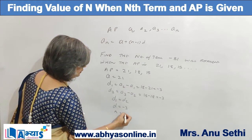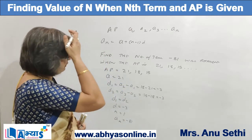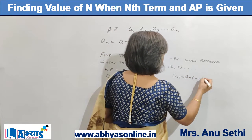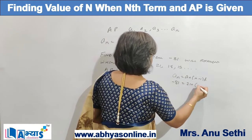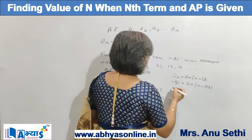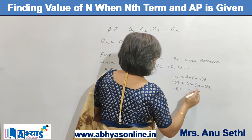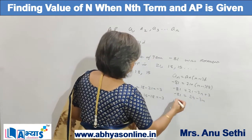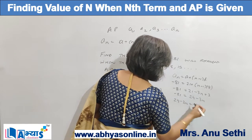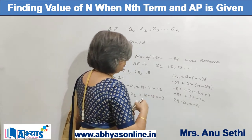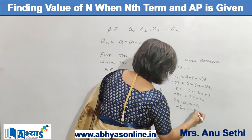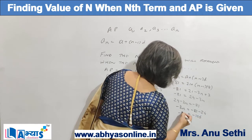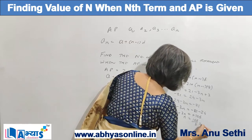We are supposed to find the value of n when a_n = -81. Substituting in the formula: -81 = 21 + (n - 1) × (-3), which gives -81 = 21 - 3n + 3, or -81 = 24 - 3n. Solving: -3n = -81 - 24 = -105, so n = 105 / 3 = 35.